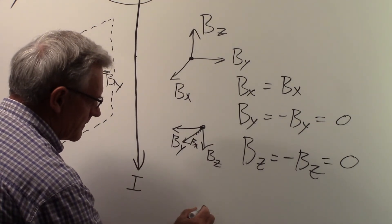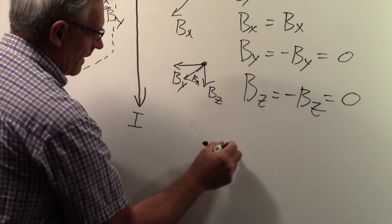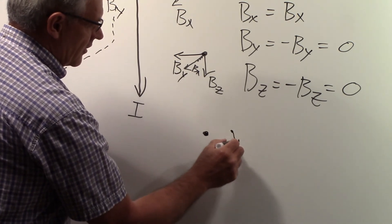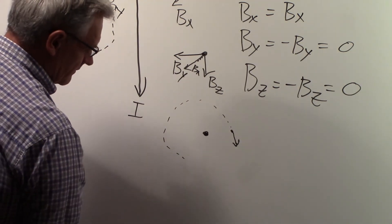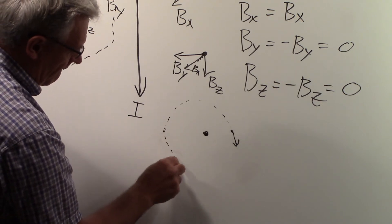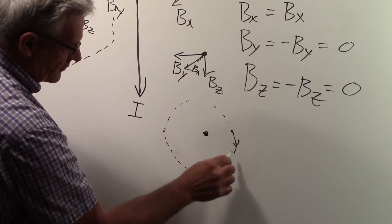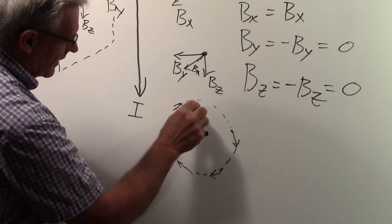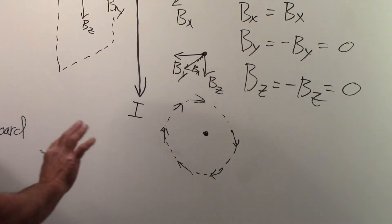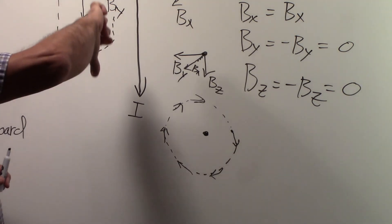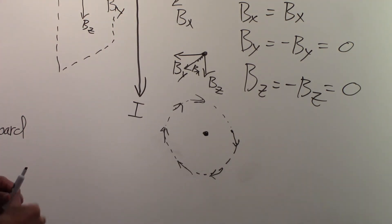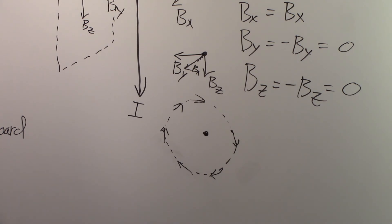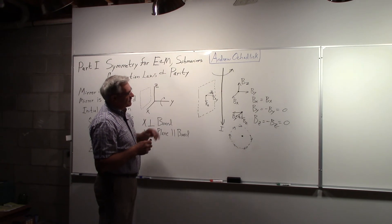If you look down from the top of the wire, we have a Bx component pointing this way, and since that point is arbitrary, anywhere as we go around the wire the magnetic field points in the same tangential fashion — the field is circular around the wire. If you remember the right-hand rule: thumb in the direction of the current, your fingers point in the direction of the magnetic field, which is what we have here. In part two, we'll apply some of these ideas to a submarine case.